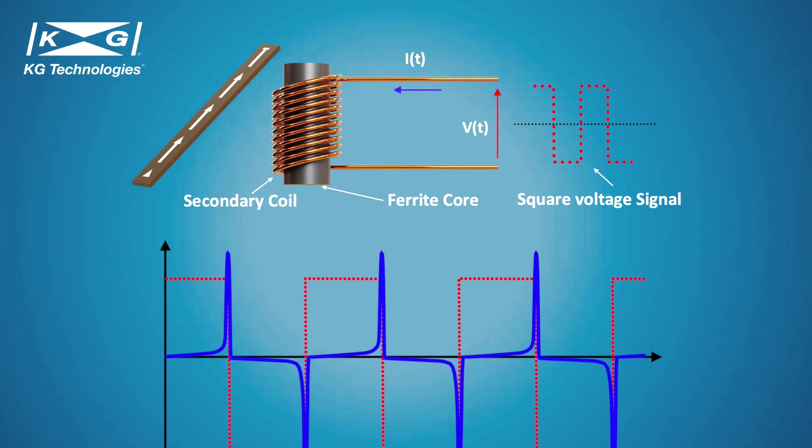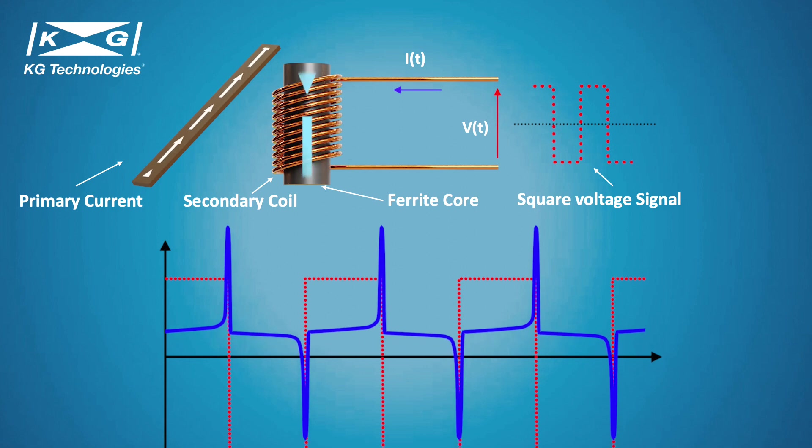If a conductor is placed close to fluxgate element, the current in the secondary coil will create an additional magnetic field, which will shift the zero position as shown. We can then recreate the primary current signal using the signal processing calculation, called second harmonic.